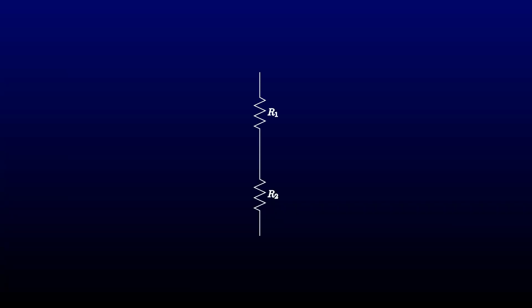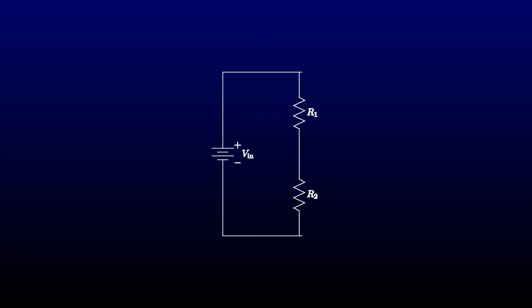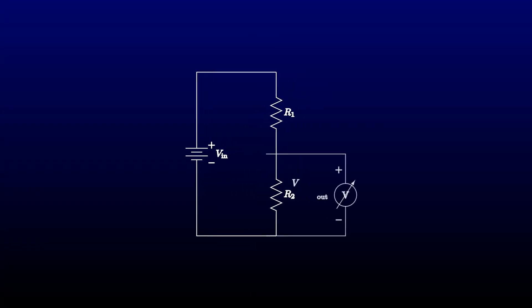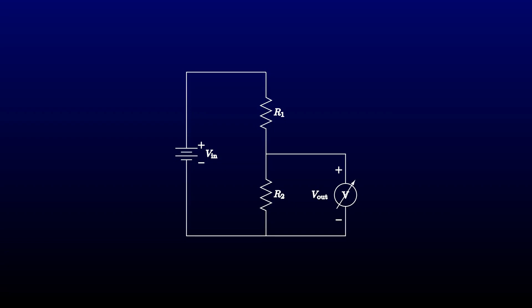A voltage divider is just a network with a couple of resistors. You have some source of voltage coming in, and you get a smaller voltage coming out. We'll soon get some shortcuts for the calculation, but right now let's analyze this circuit with Ohm's and Kirchhoff's laws.